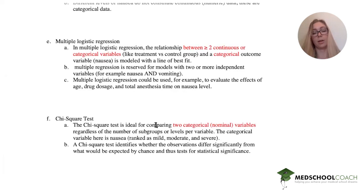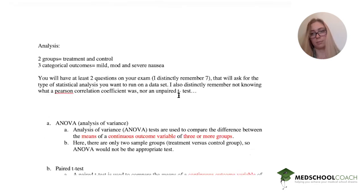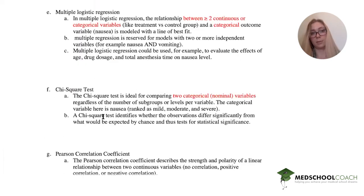In a chi-square test, we are comparing two categorical variables. Great. Regardless of the number of subgroups, and then, so the categorical variable here is nausea, and then the chi-square test identifies whether the observations differ significantly from what would be expected, and it essentially tests for significance. So that's kind of what we're looking for. So we're comparing more than two categorical variables, which is our levels of nausea. So that's our best bet so far.